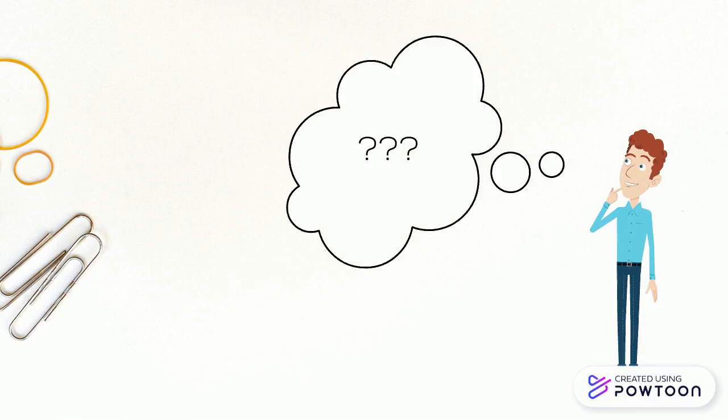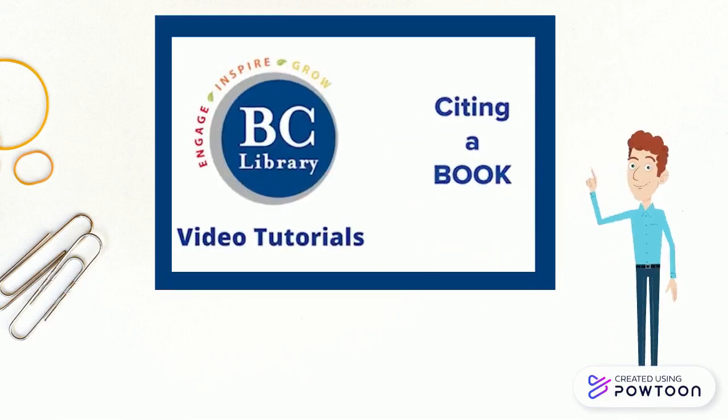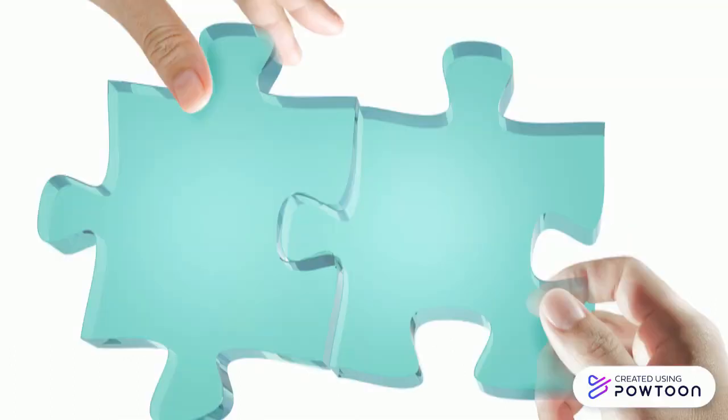If you're not sure where to find this information, the video Citing a Book on the BC Library YouTube channel can help. Once you have these pieces, you just need to arrange them into APA shape.